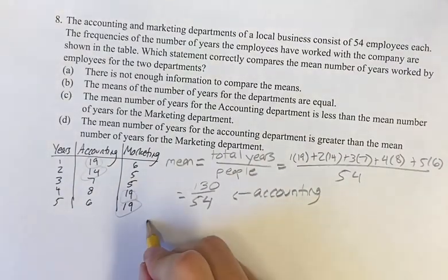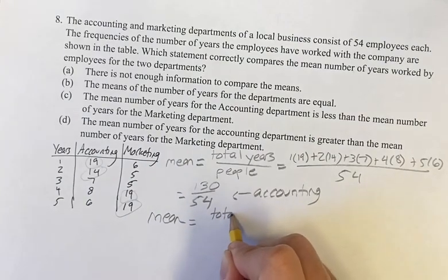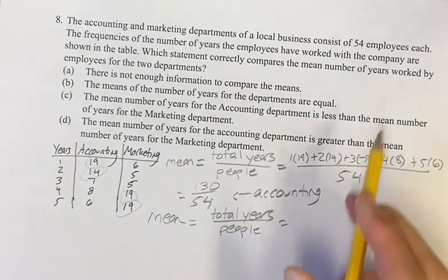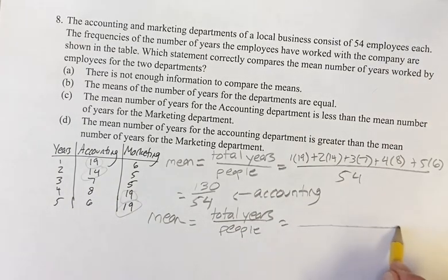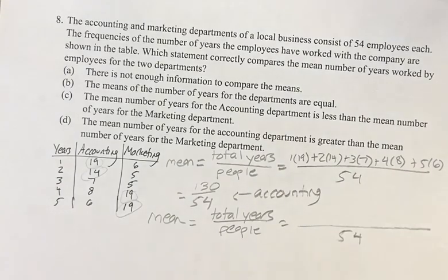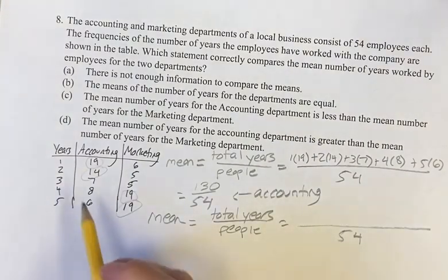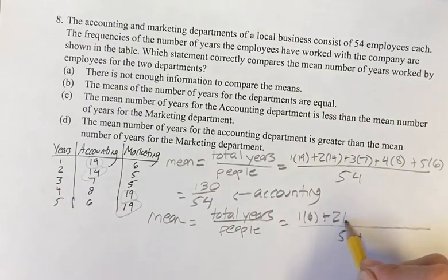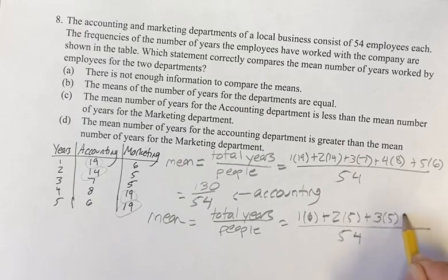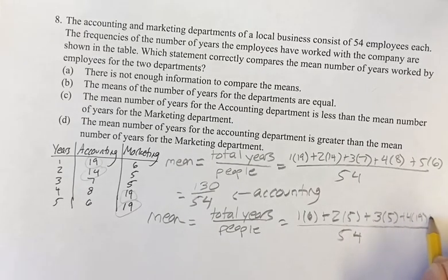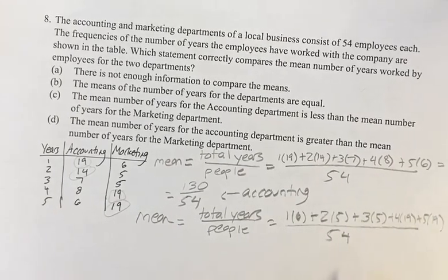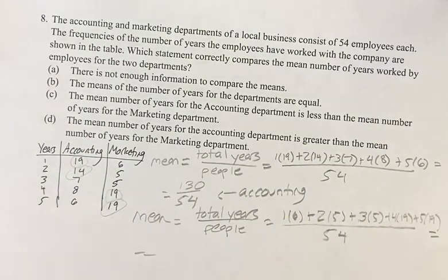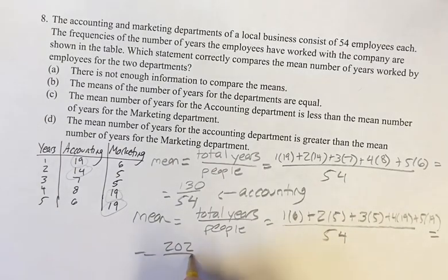Now for marketing, similar thing — total number of years worked over the number of people, which is again 54 for both of them. One year for 6 people would be 1×6, then 2×5 + 3×5 + 4×19 + 5×19. Adding those numbers up on top gives us 202 divided by 54.